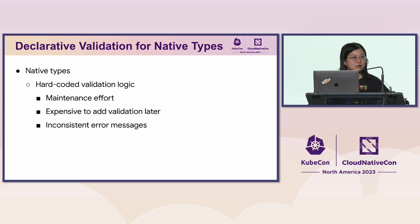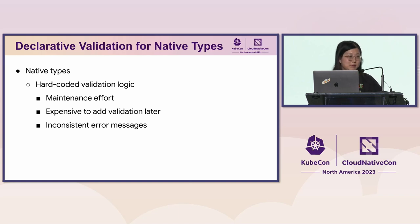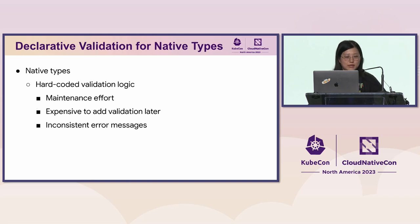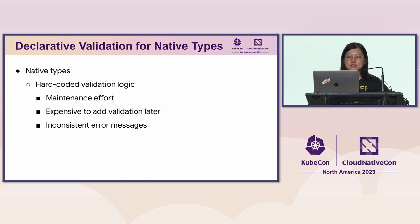It also makes it very expensive to add missing validations later, because as maintainers of a fundamental project like Kubernetes — which has a whole ecosystem built on top of it — we really don't want to break anything. The first principle is that things which previously worked keep working. This makes adding any missing validations later very expensive, and it may cause inconsistent error messages in different ways because it's all human-written code. Also, since the server uses Go structs and kubectl uses OpenAPI schema, there might be inconsistency there as well.